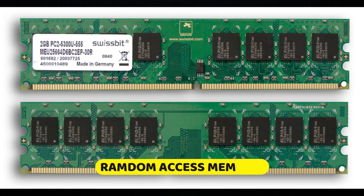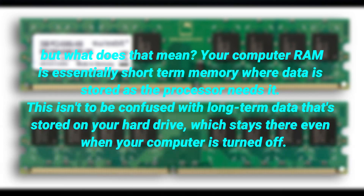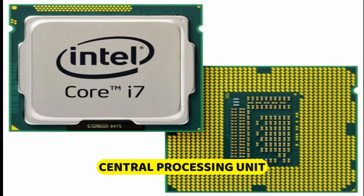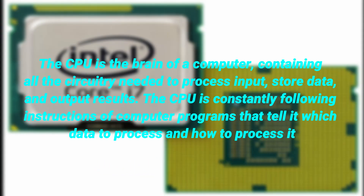RAM stands for random access memory. Your computer's RAM is essentially short-term memory where data is stored as the processor needs it. This is not to be confused with long-term data that's stored on your hard drive, which stays there even when your computer is turned off.